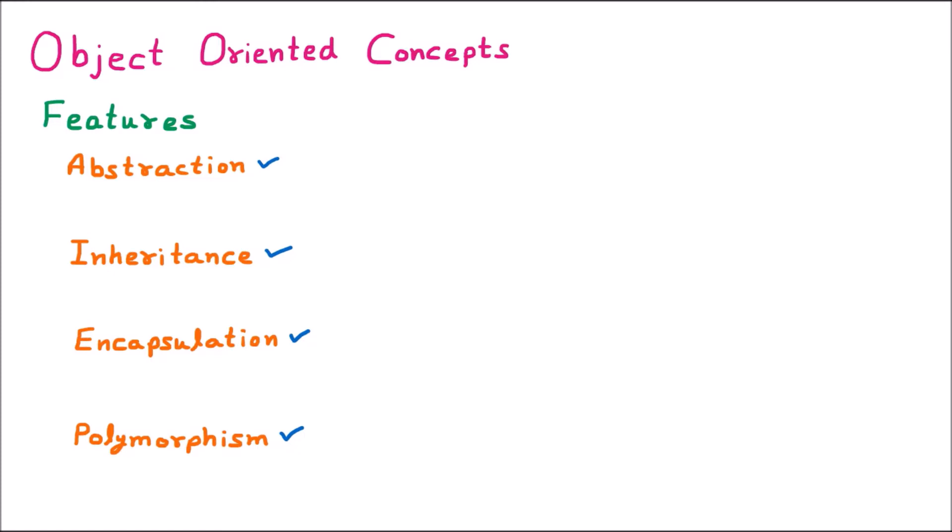We are learning what the object-oriented concepts mean. What is abstraction? Whenever we are going to hide something — hide any data — that is called abstraction.